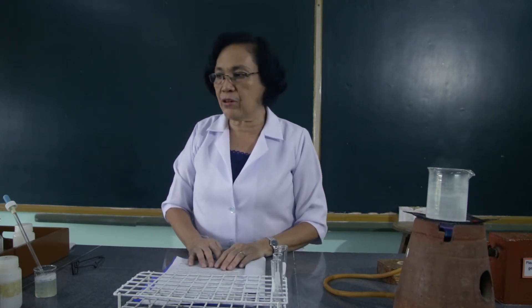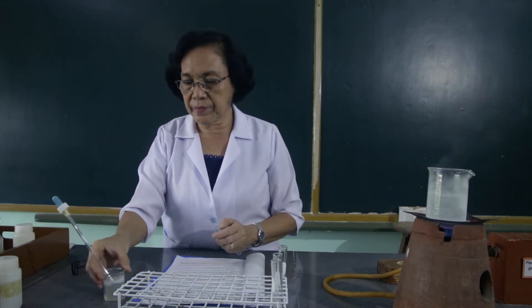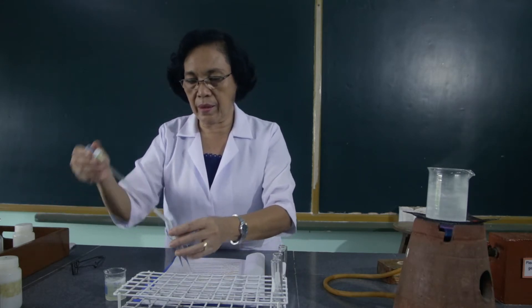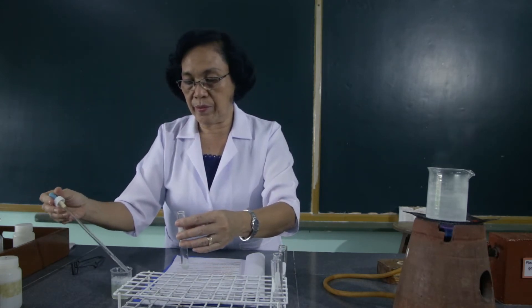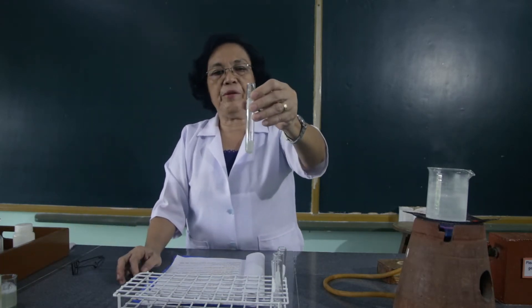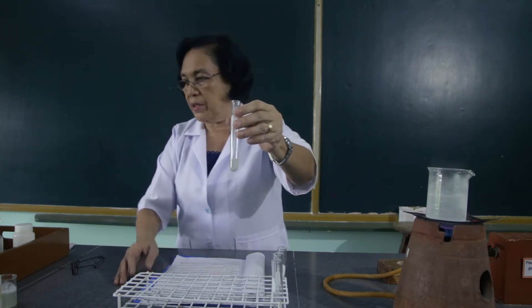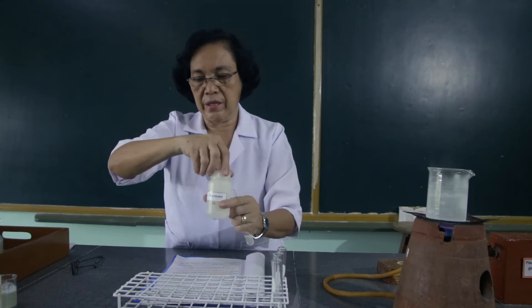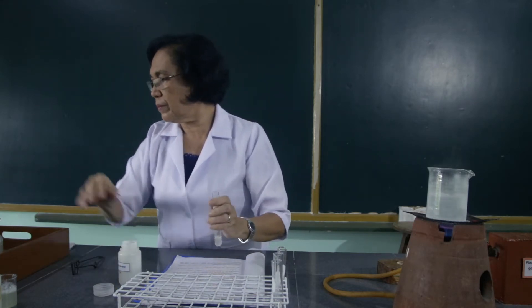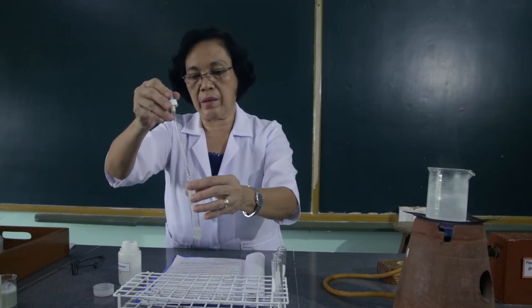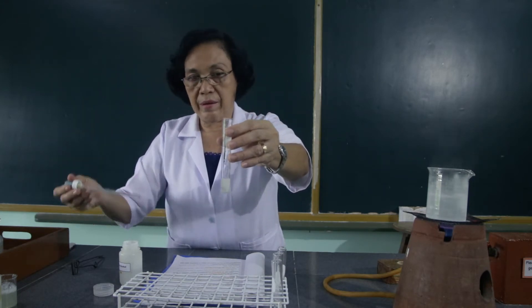For the next precipitation reaction, we are going to add ethyl alcohol to the egg albumin. We will use 2 ml of the egg albumin and we will add it with 4 ml of the ethyl alcohol. So this is the ethyl alcohol. Observe what happens.